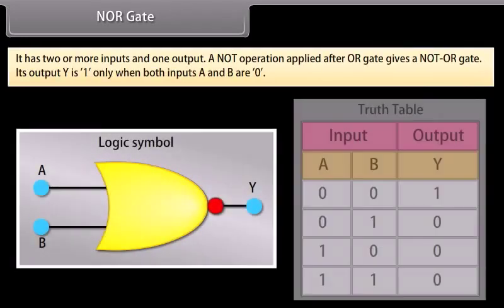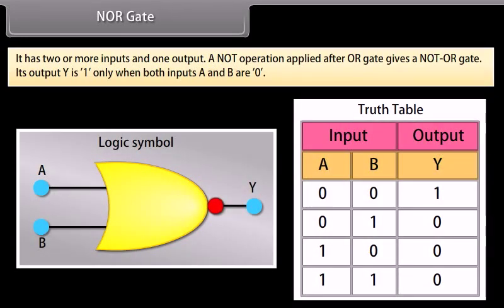NOR gate: Has two or more inputs and one output. A NOT operation applied after an OR gate gives a NOR gate. Its output Y is 1 only when both inputs A and B are 0.